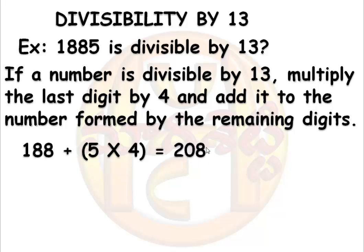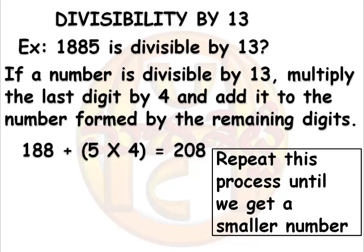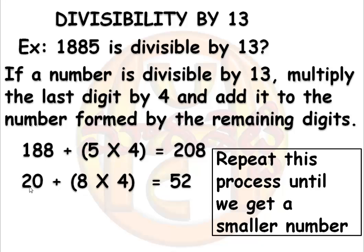Now again repeat this process until we get a smaller number. Applying the same process on 208: the last digit is 8. Multiplying 8 by 4 and adding to the number formed by the remaining digits, excluding 8, we get 20. Adding these two we get 52.